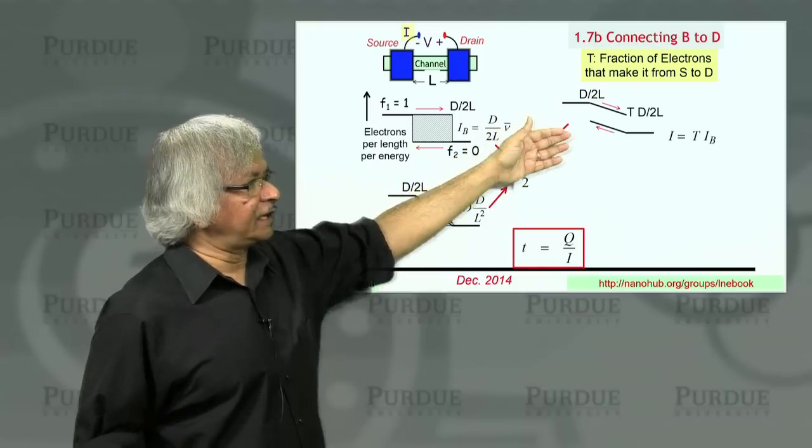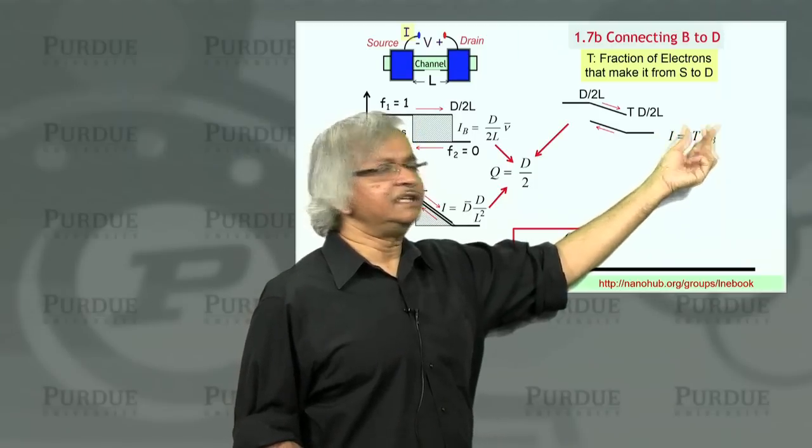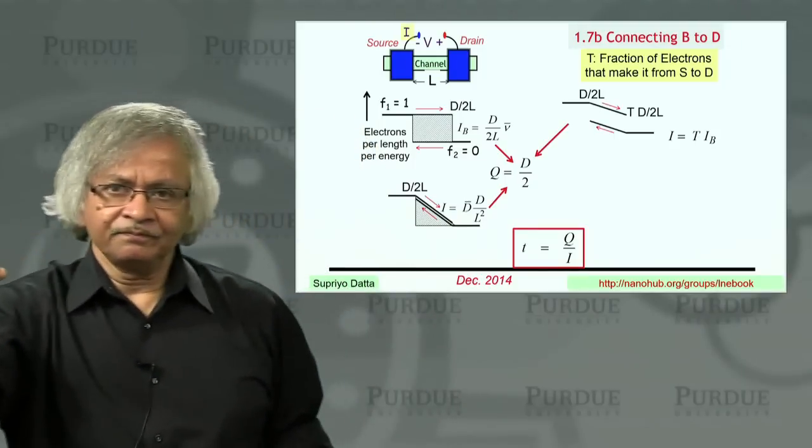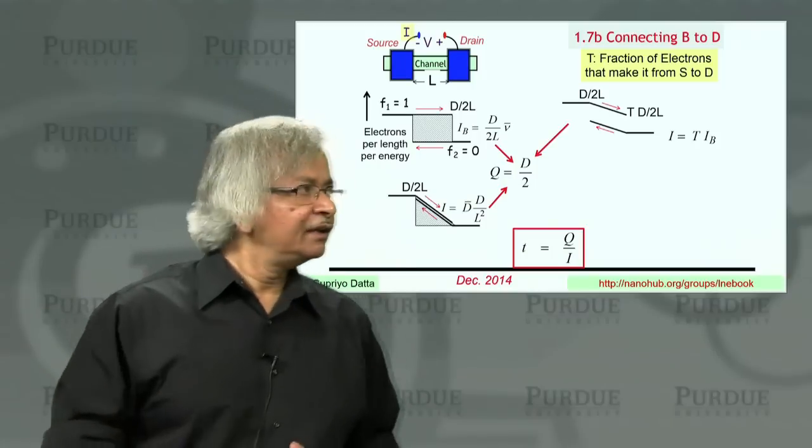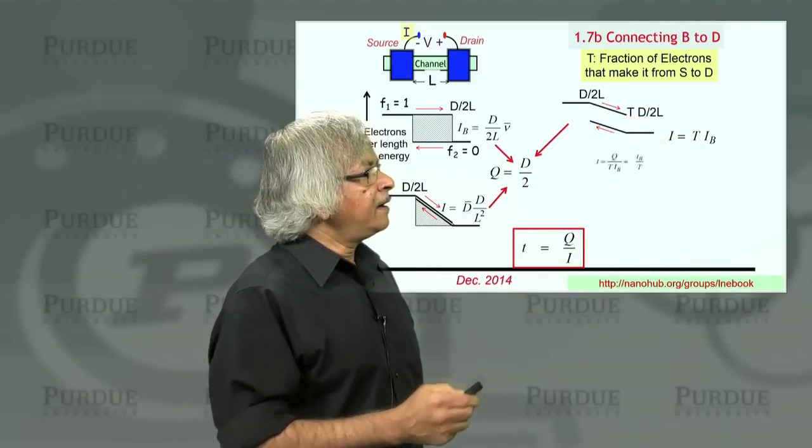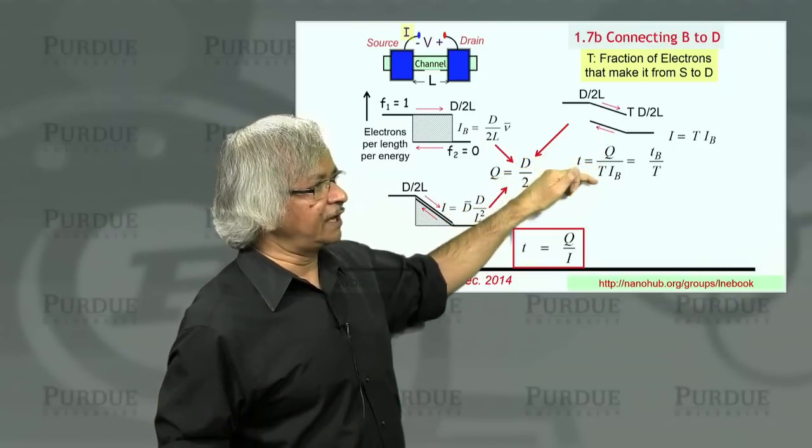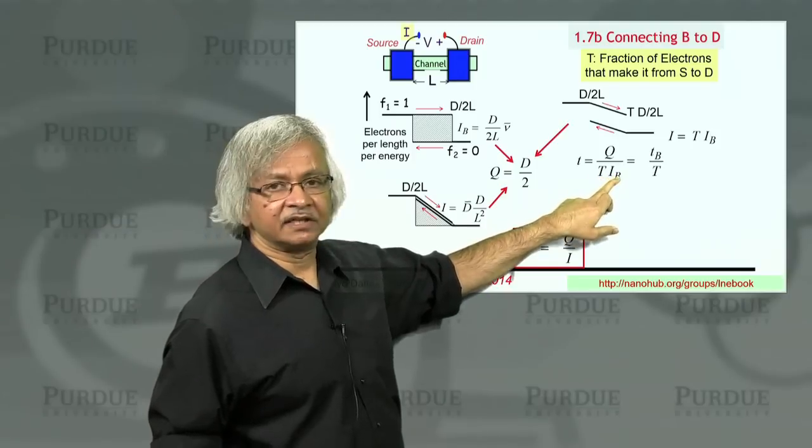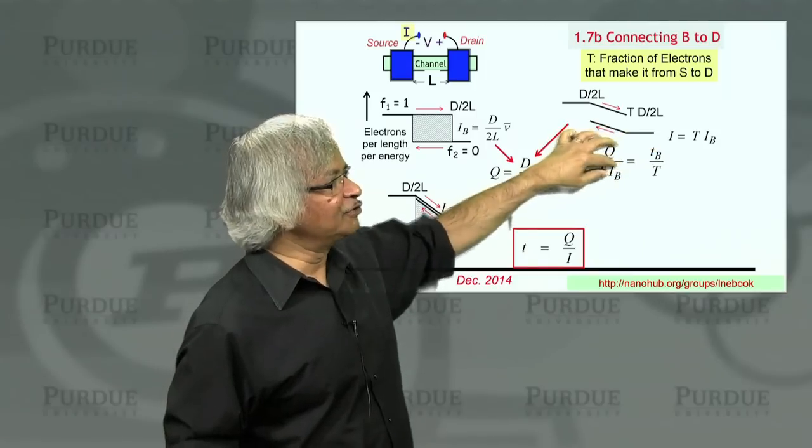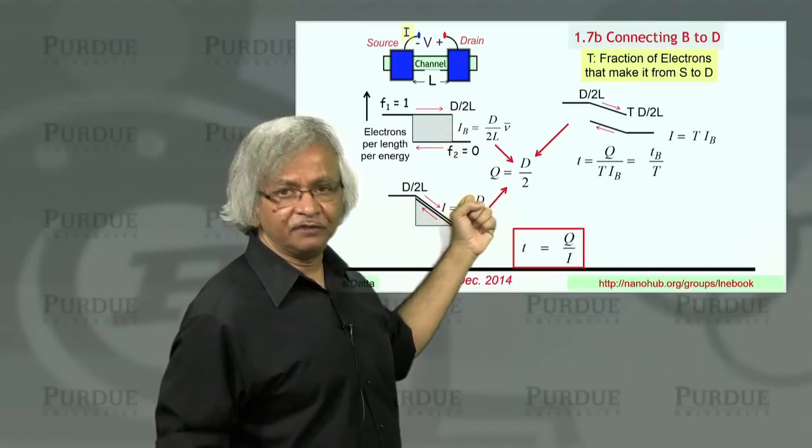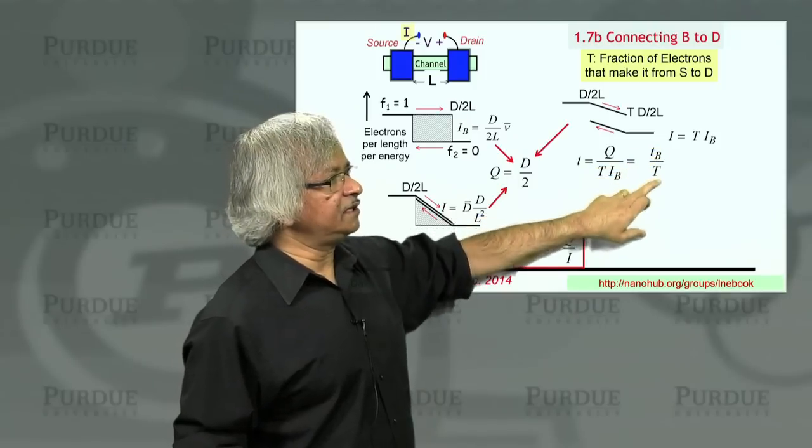If you try to write the current, what you might expect is that whatever current you had in the ballistic case, now the current will be T times that, because only 50 percent of the electrons get through. Previously if you had a ballistic current of 2 milliamps, now you'll have only 1 milliamp. This current would be T times that. When I try to calculate the average time an electron spends in the channel, I'll get q divided by i, and i is T times the ballistic current, and q divided by the ballistic current is the ballistic time. The q stays the same in all three cases, whether ballistic, diffusive, or halfway there. It's the i that's different. So it's Tb divided by T.